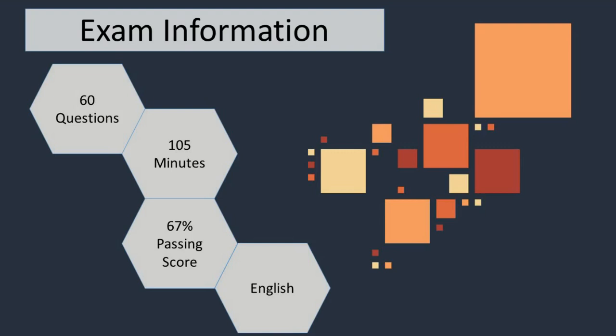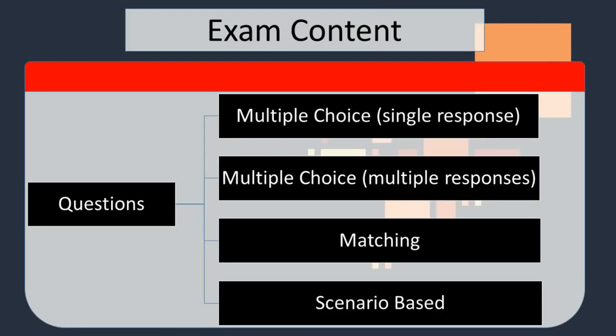This certification exam consists of 60 questions, and the time duration to solve all these questions is 105 minutes. In order to get success in HP 0-Y52 exam, candidates need to achieve a passing score of 67%. The given exam language is English. There are four types of questions in this exam.